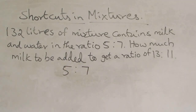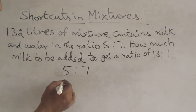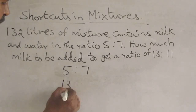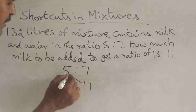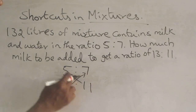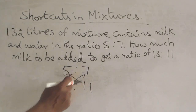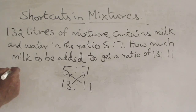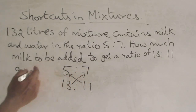From the target ratio of 13 is to 11 and the original ratio of 5 is to 7, just cross multiply. 11 into 5 is 55. 13 into 7 is 91. So this one is 91 and this one is 55.